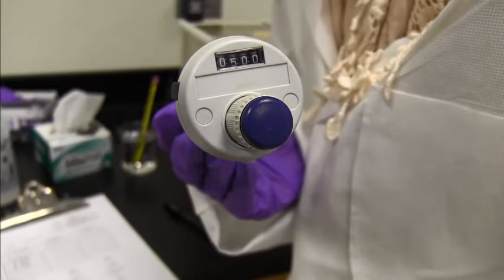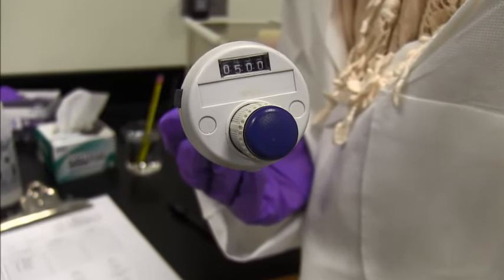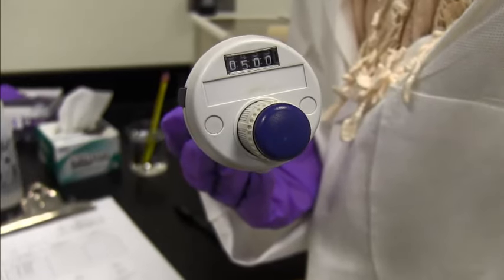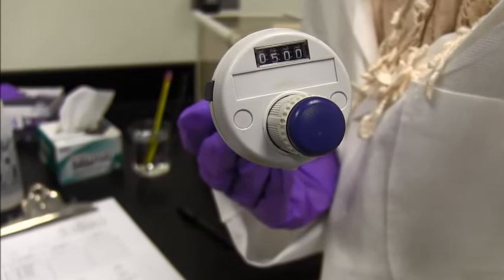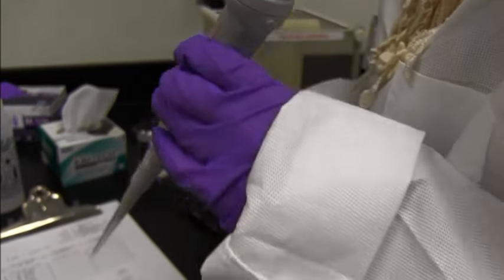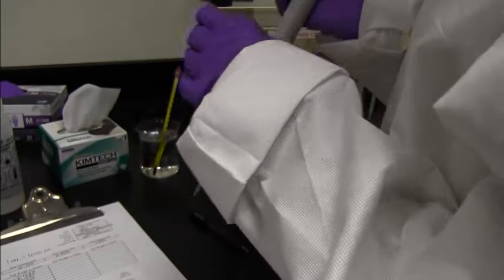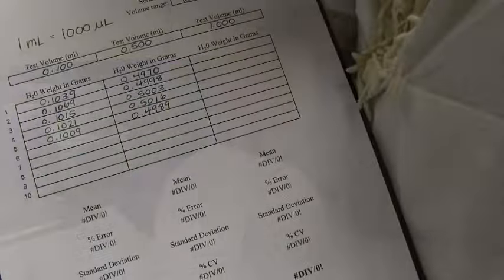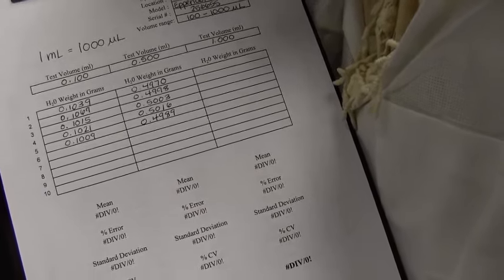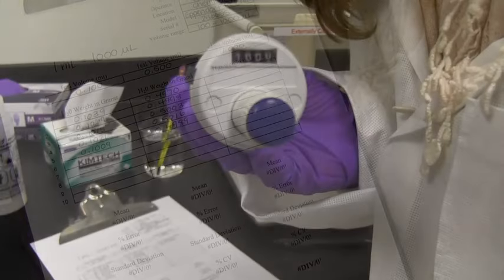Now that we're doing 500 microliters, I have set the pipette to see 500 on the display. And now we're going to repeat, taking the 5 replicates of the weight of the water. So we'll do the same thing that we did for the 100 microliters. So now that I've done the 0.5 mils 5 times, I'm going to move on to do the 1 mil.